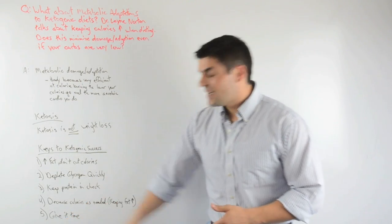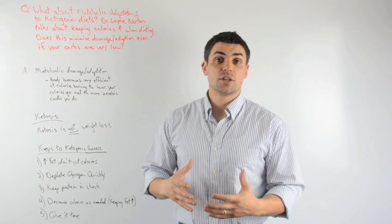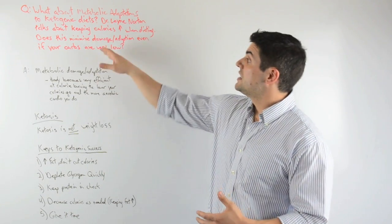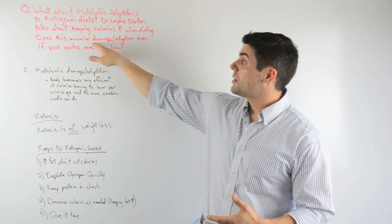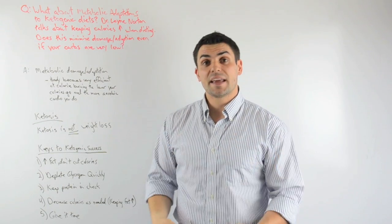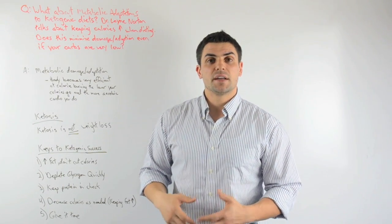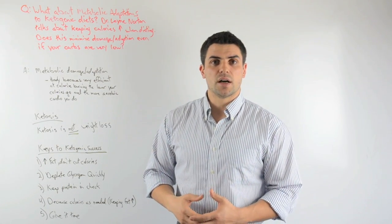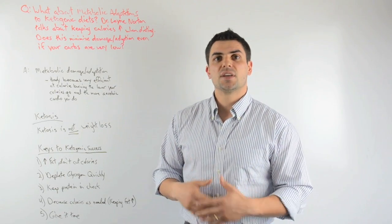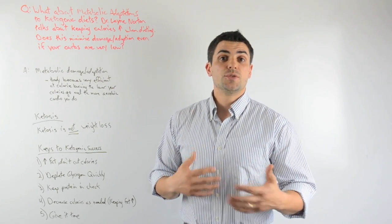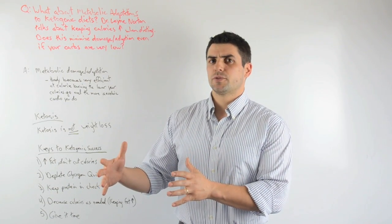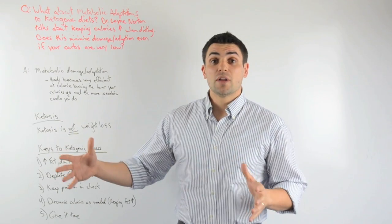The fifth thing is to just give it time. This adaptation to a ketogenic diet takes time. If you jump the gun, you're actually probably going to maximize the metabolic damage and adaptation. Because if you jump the gun and start cutting calories too fast because you're eager to start eliciting weight loss, that's going to start screwing with things. So give your body time to adapt to ketosis. Give your body time to adapt to using fat as its primary fuel source. Think of how long you've been using carbohydrates as your primary fuel source. Your whole life.